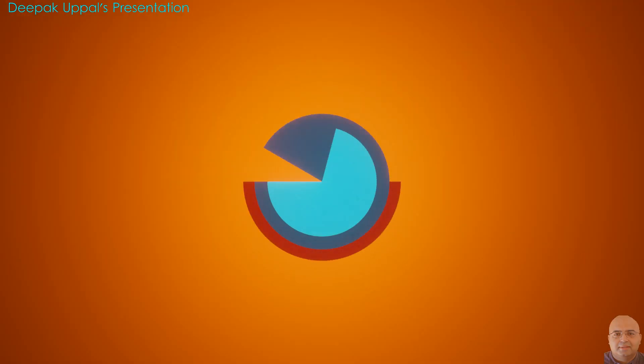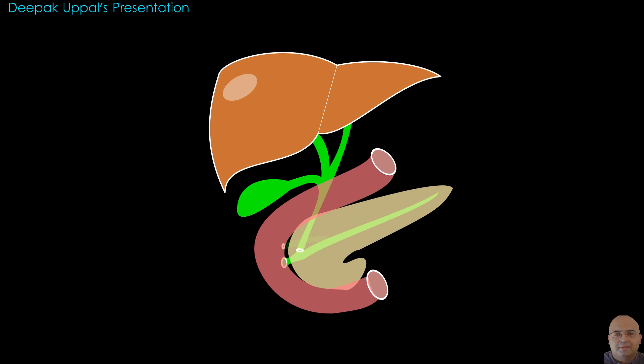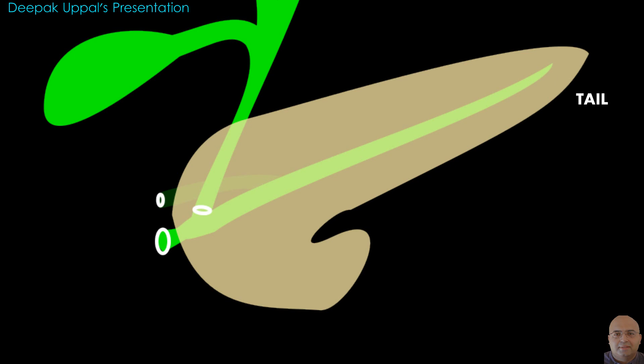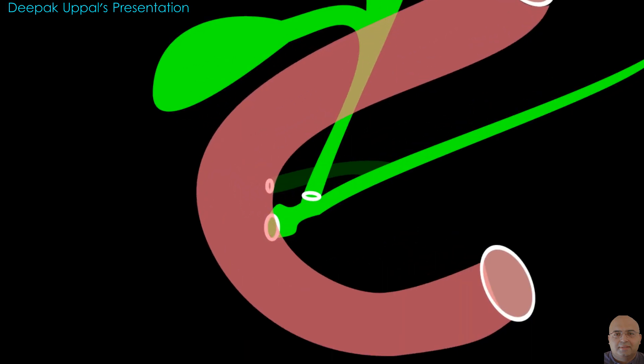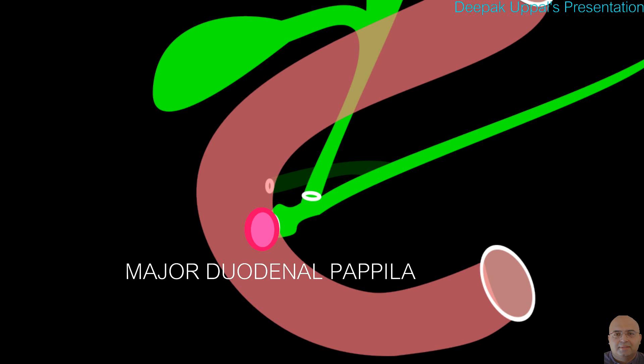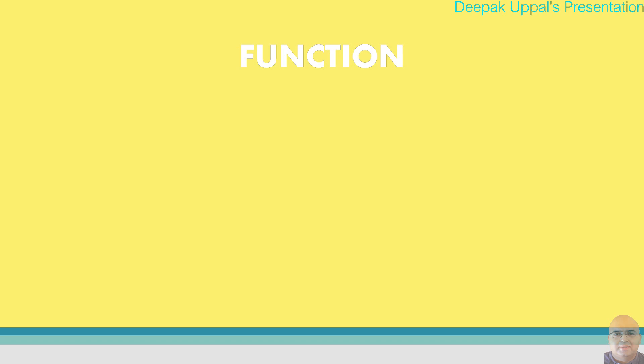Coming to the exocrine part: the head of the pancreas is disc-shaped and lies within the concavity of the duodenum. The main duct of the pancreas begins in the tail and runs the length of the gland, receiving branches. The main duct, along with the bile duct, joins and immediately opens into the duodenum at the major duodenal papilla. An accessory duct of the pancreas drains the upper part of the head of the pancreas, then opens into the duodenum at the minor duodenal papilla, above the main duct.